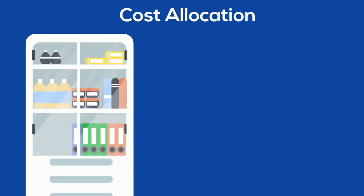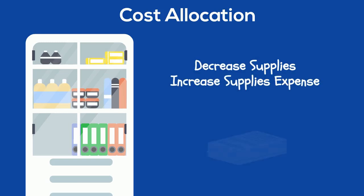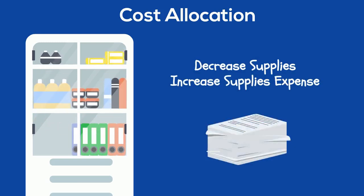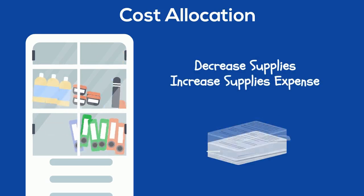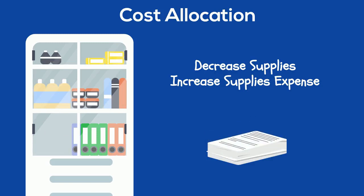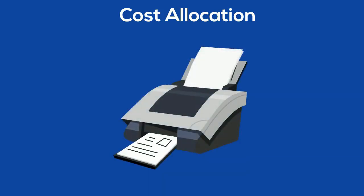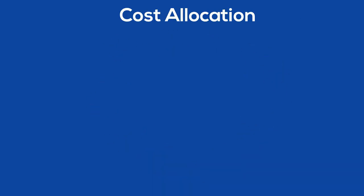As you use supplies, you decrease the supplies account and increase supplies expense. Supplies are easy to see use — you physically use them and they're gone. The use of property, plant, and equipment is not quite as easy to see. When we use something like a piece of equipment, the equipment doesn't start disappearing as you use it.